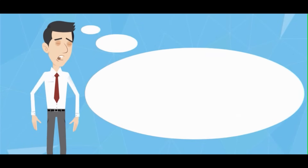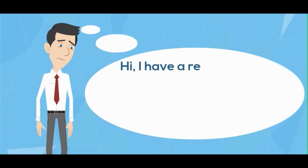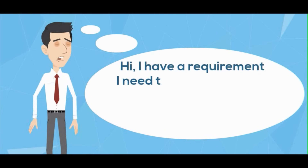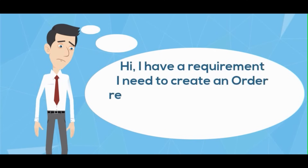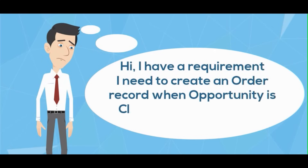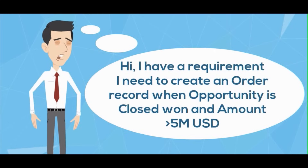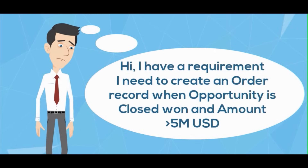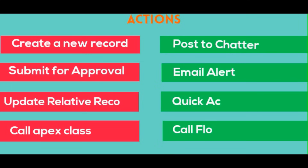You want to create an order record when an opportunity is Closed Won and amount is greater than 5 million. Process Builder can help you with this. Out of all these actions, 'Create New Record' will serve your purpose. Don't worry, I will explain with an example.